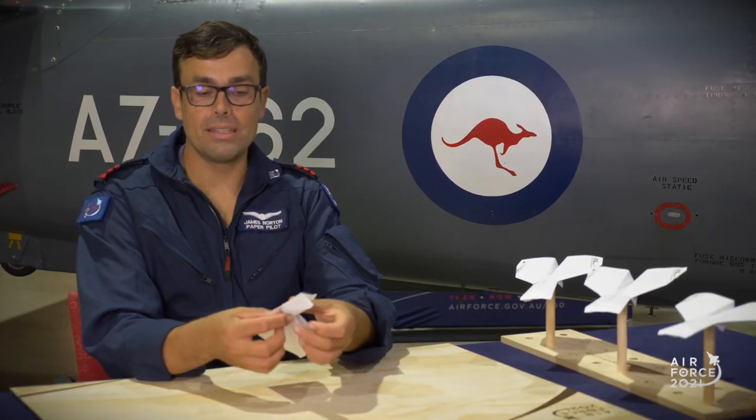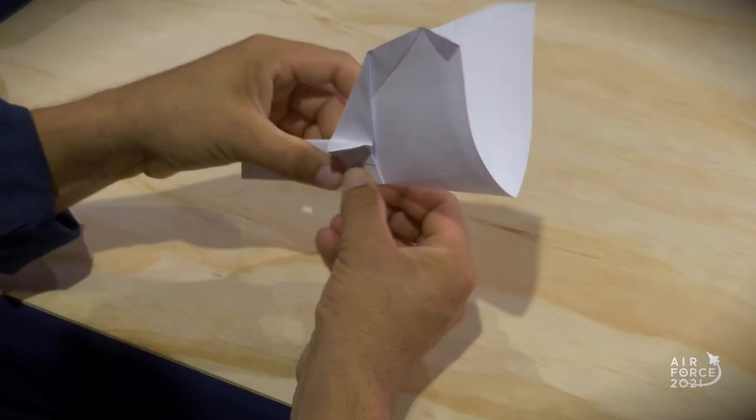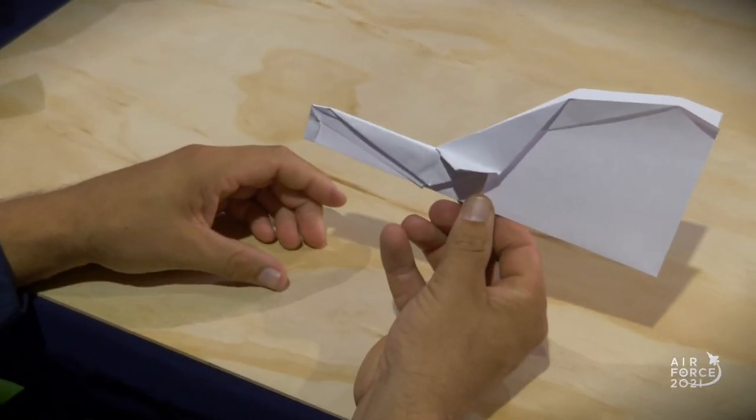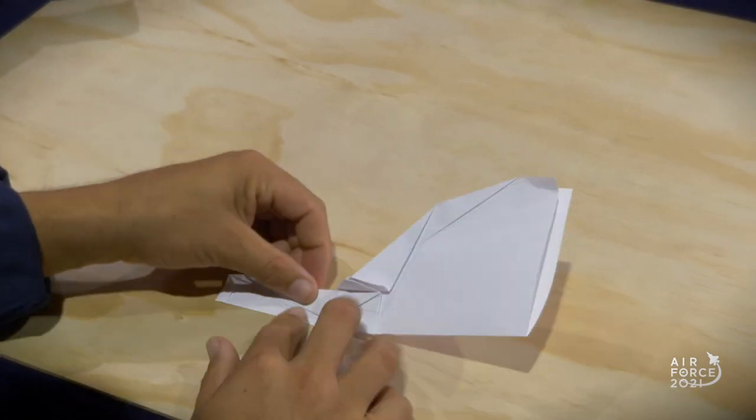Now we're going to fold in half along that center crease that we've already made. And you'll see that those landing gears pointing on either side. Pretty nice.